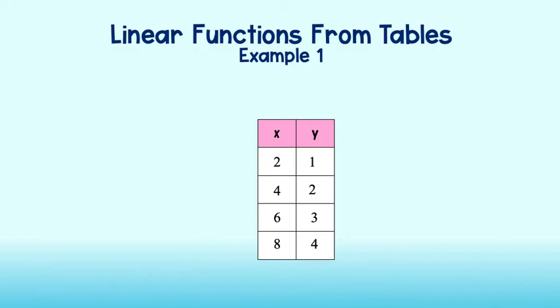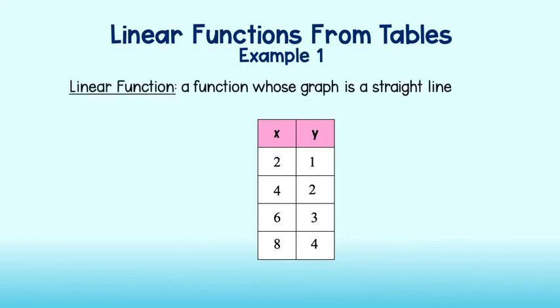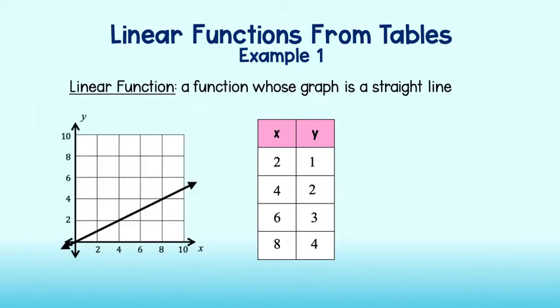First, recall that a linear function is just a function whose graph is a straight line, such as this one right here. When we look at a graph, we know that if we see a straight, non-vertical line, then we have a linear function. But what do we look for in a table that tells us this straight line will appear once graphed?